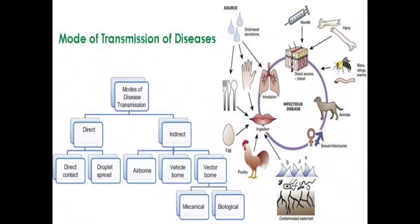Droplet spread means, for example, if we have a common cold and we sneeze, the droplets are released into the air and transmitted through the air — that is droplet spread. Then, indirect transmission includes airborne disease. For example, when we sneeze, the common cold virus enters the environment through air droplets and travels from one person to another through the air.